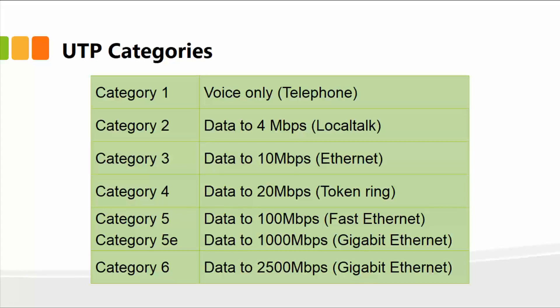Cat four can handle data up to 20 megabits per second, also referred to as MIPS. Cat four with data up to 20 MIPS is required within a token ring network. Cat five is very common, has data up to 100 MIPS, and is also known as Fast Ethernet — so cat five and Fast Ethernet are synonymous. Then we have category five E, which is Gigabit Ethernet, and cat six up to 2500 MIPS.